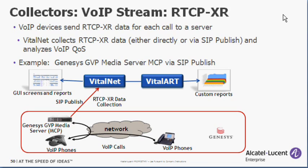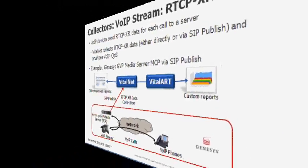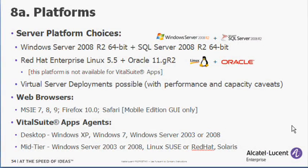One example is the Genesis GVP Media Server MCP device, which provides VoIP call information via SIP publish. VitalSuite Release 12 can be deployed on Windows Server 2008 64-bit platforms. Another choice for all products except VitalSuite Apps is the Red Hat Enterprise Linux 5.5 platform.